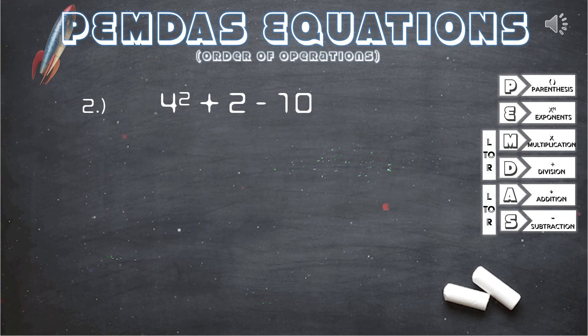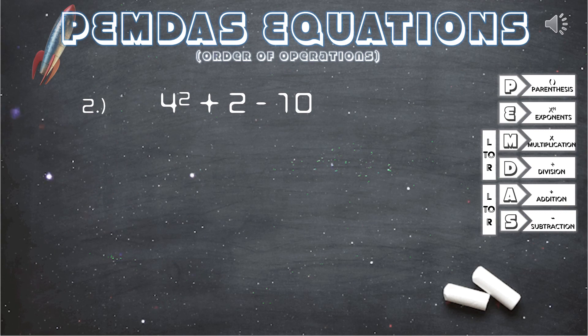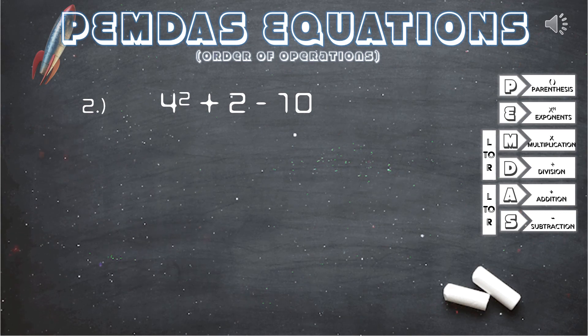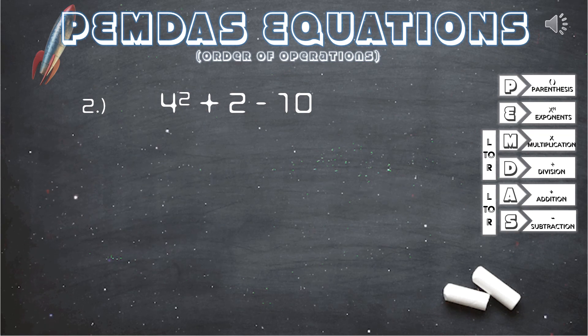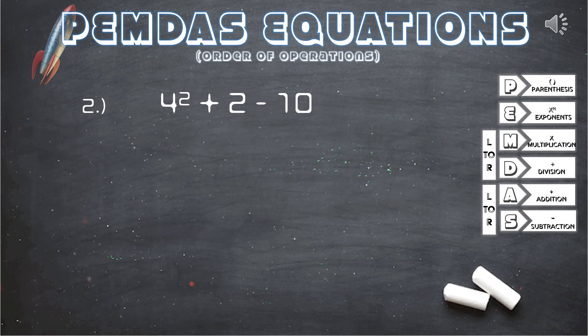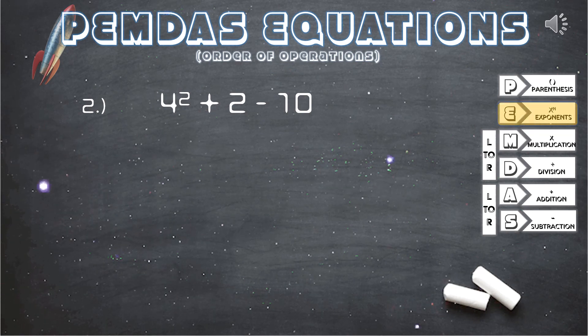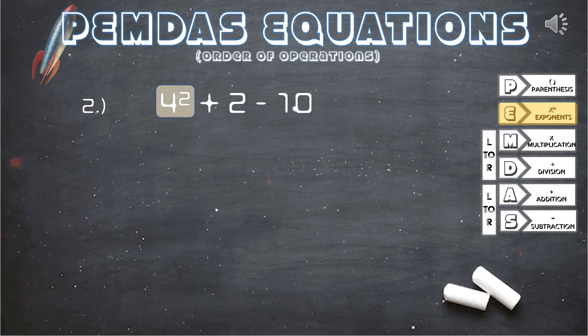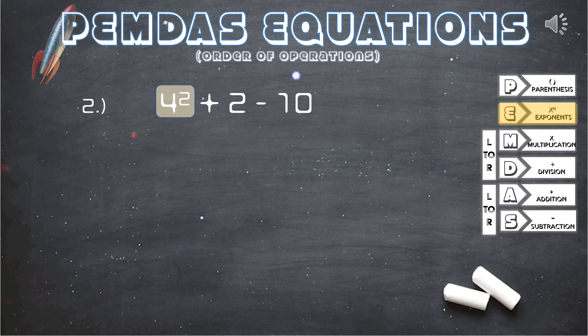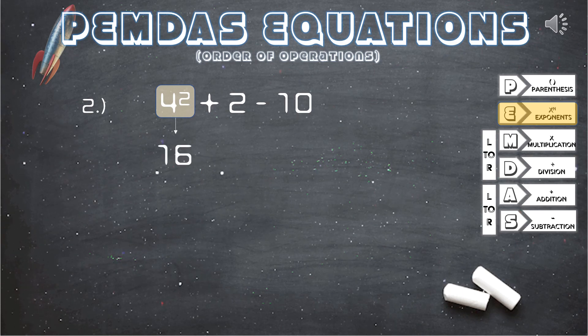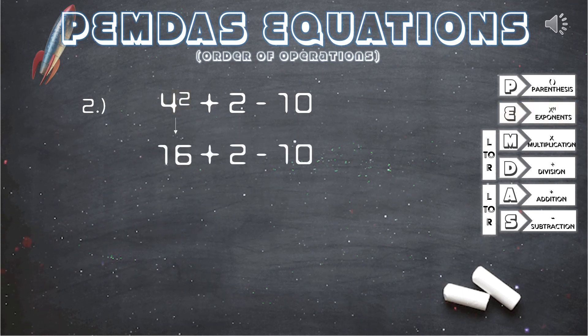Question 2. 4 squared plus 2 minus 10. First, we check our PEMDAS guide and since there are no parentheses, we will start by solving the exponent. 4 squared. That means we will be multiplying 4 times 4, which equals 16.